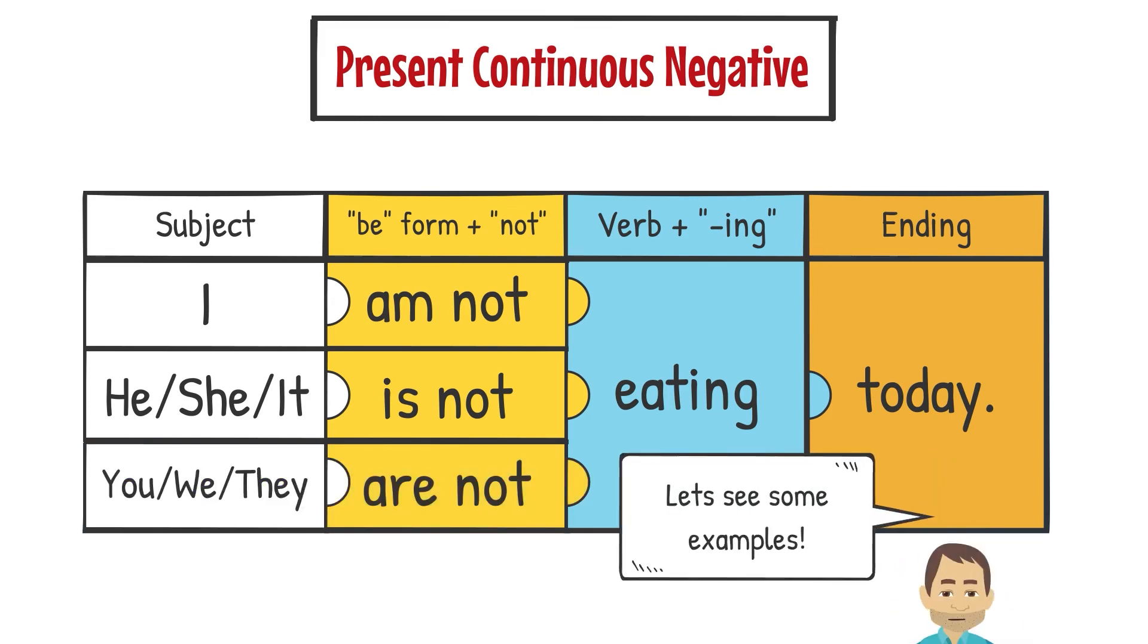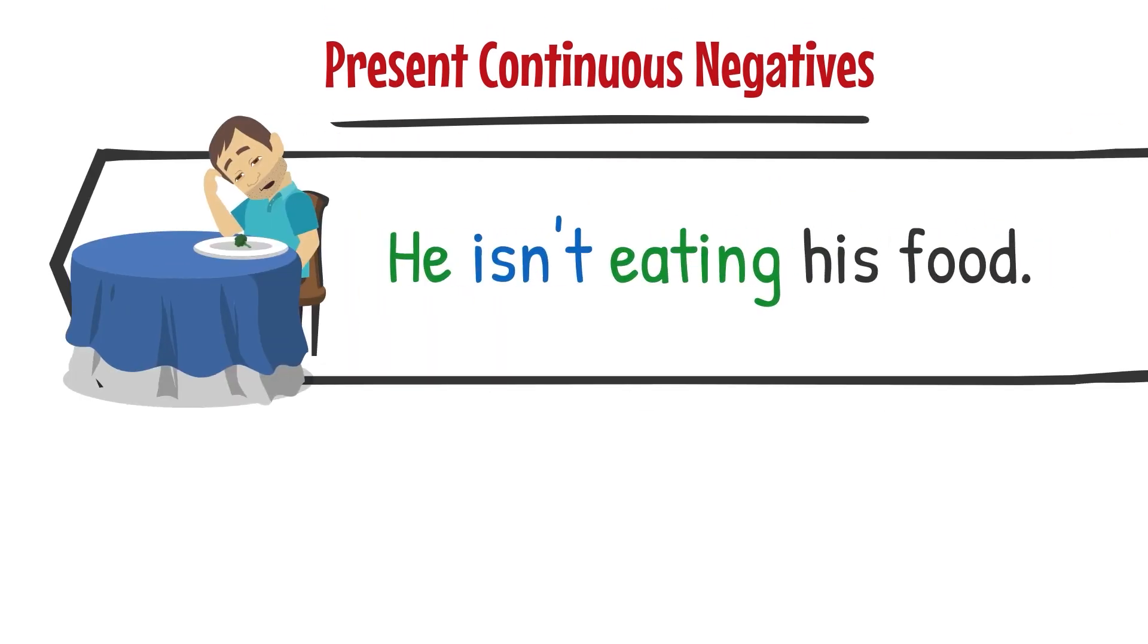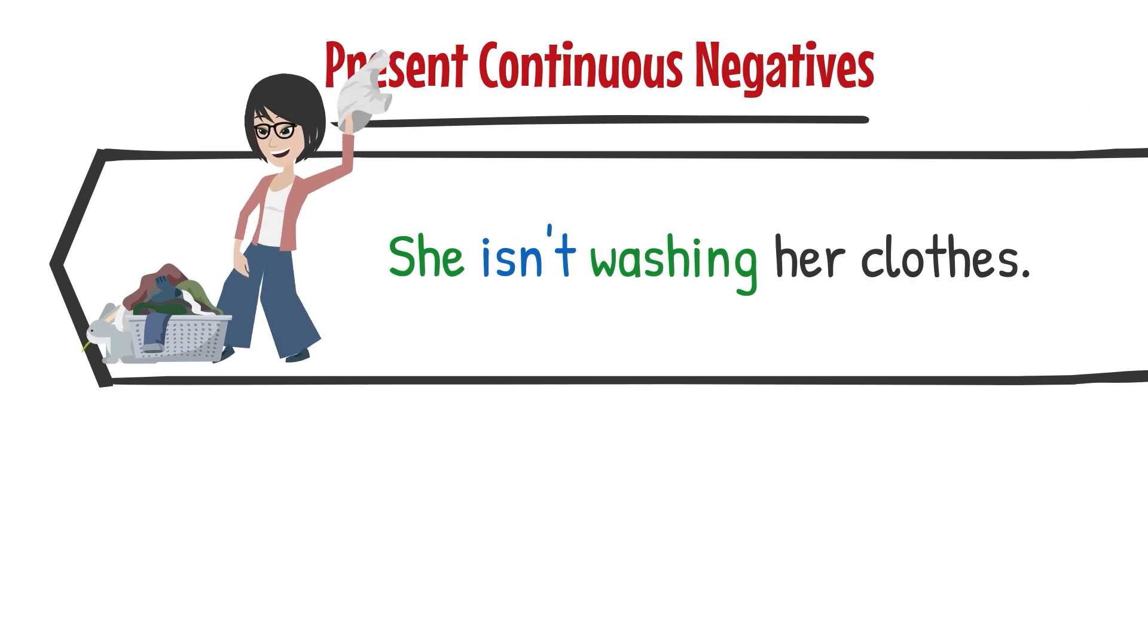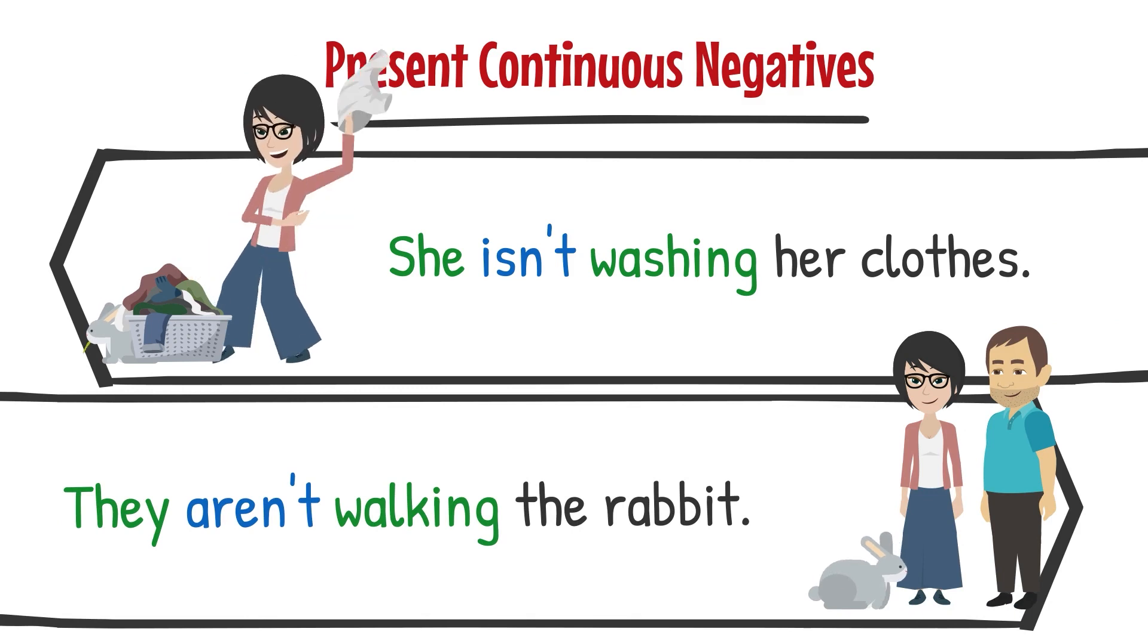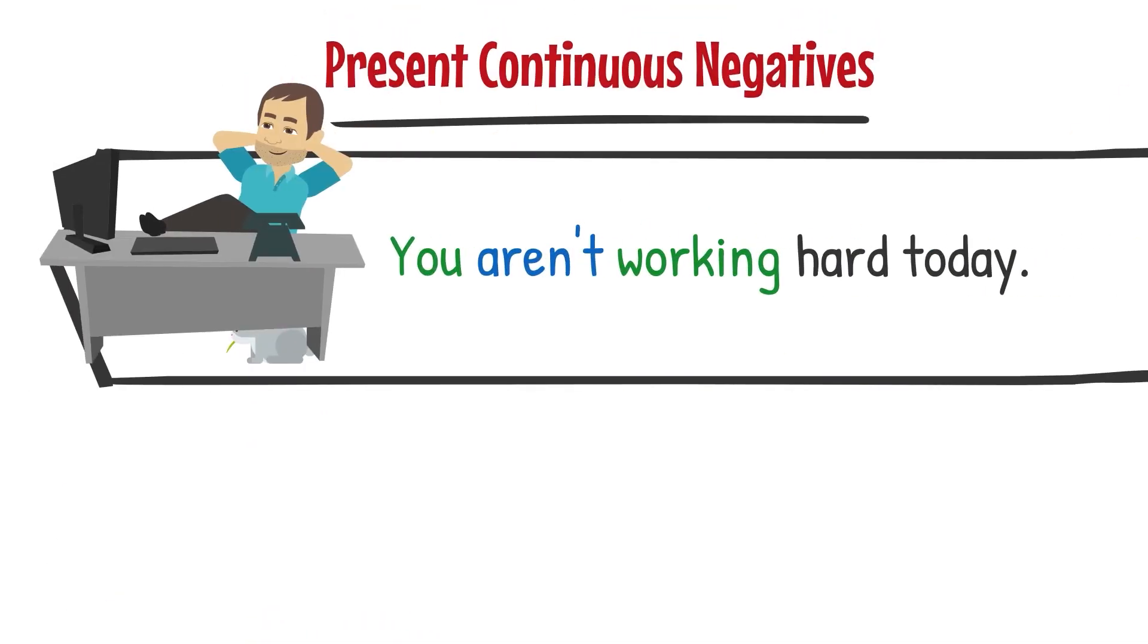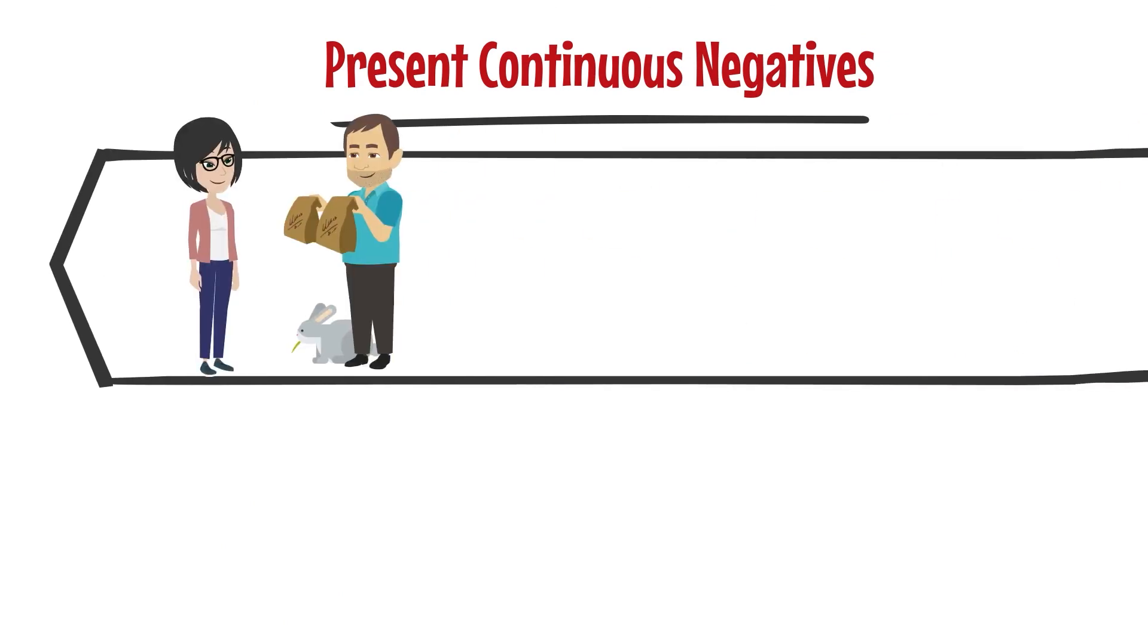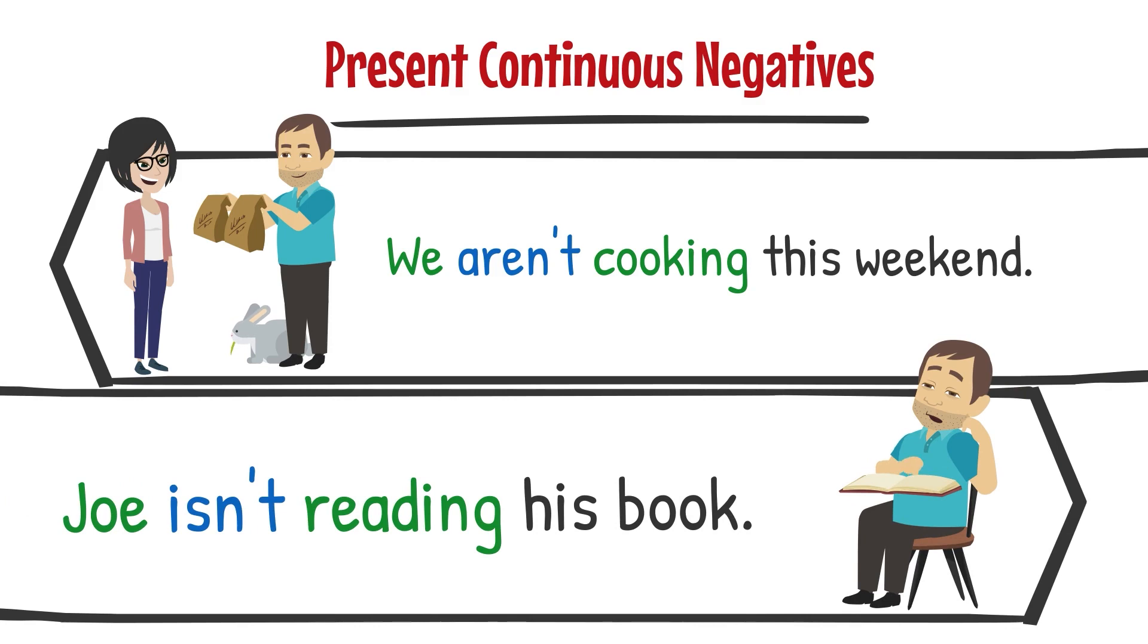Let's see some examples. He isn't eating his food. They aren't going outside today. She isn't washing her clothes. They aren't walking the rabbit. You aren't working hard today. We aren't walking to work today. We aren't cooking this weekend. Joe isn't reading his book.